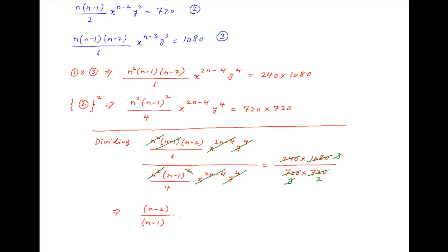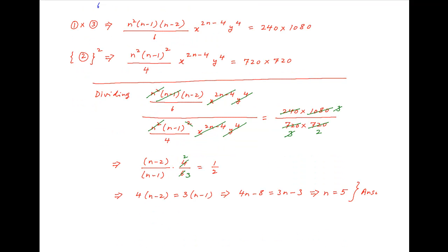Therefore we have (n-2)/(n-1) times 4/6 equal to one half. This can be written as 4(n-2) = 3(n-1), which implies that 4n - 8 = 3n - 3, and therefore n is equal to 5, which is the required answer.